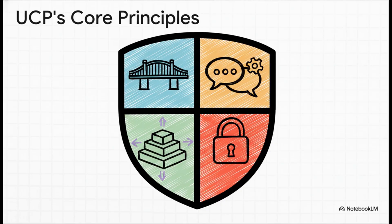UCP breaks that bottleneck with four big ideas. First, unified integration — a business builds one connection and it just works everywhere. Second, a shared language, so everyone is speaking the same dialect of commerce. It's also built to be extensible, so it can grow and adapt as technology changes. And finally, a security-first approach is baked in from the very beginning.